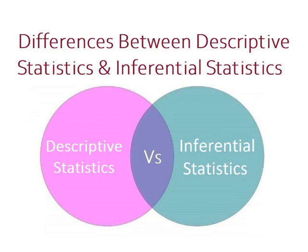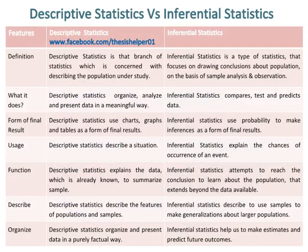Differences between Descriptive Statistics and Inferential Statistics. Descriptive statistics is that branch of statistics which is concerned with describing the population under study, while inferential statistics is a type of statistics that focuses on drawing conclusions about a population on the basis of sample analysis and observation.